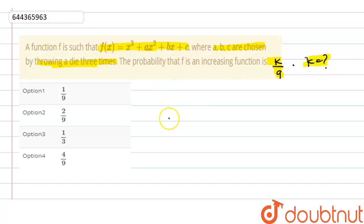First, the given function is f(x) = x³ + ax² + bx + c. We have given that the function is an increasing function.